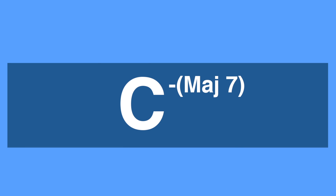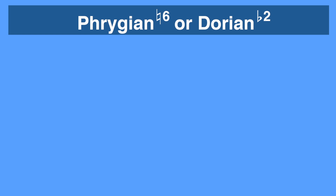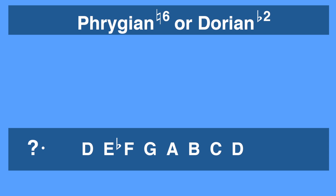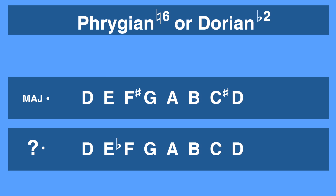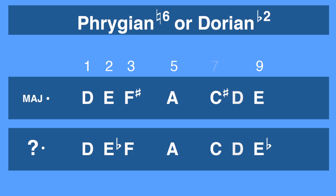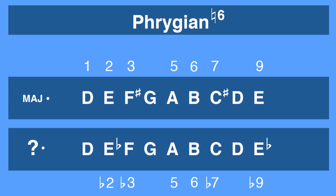The next mode is often referred to as either Phrygian natural six or Dorian flat two. The second mode would be D, E-flat, F, G, A, B, C, and D. D major is D, E, F-sharp, G, A, B, C-sharp, and D. For this example, we must isolate the second degree as well as the root, third, fifth, and seventh. We see that we get a flattened second, flat third, natural five, and flat seven. I prefer to call this scale Phrygian natural six, as the flattened second is often associated with the Phrygian sound.